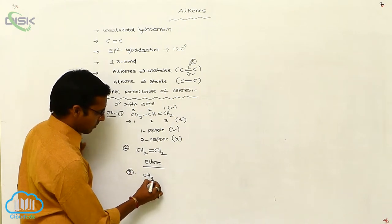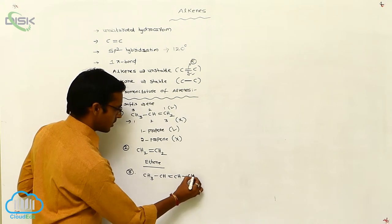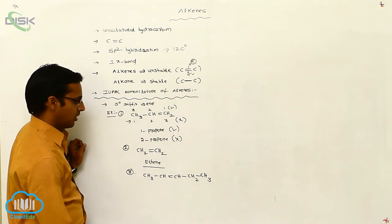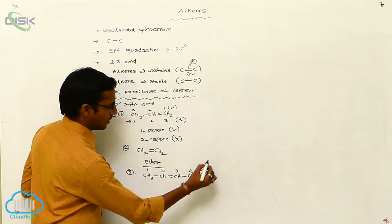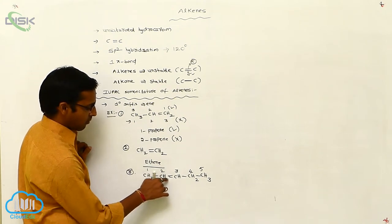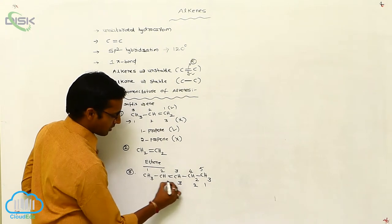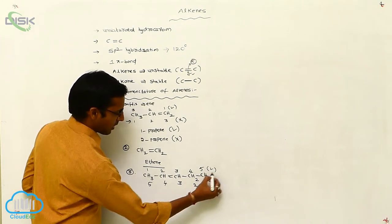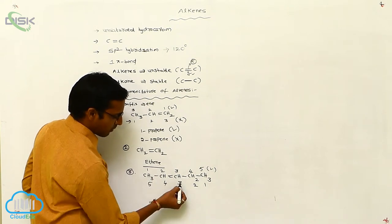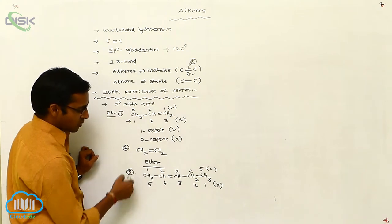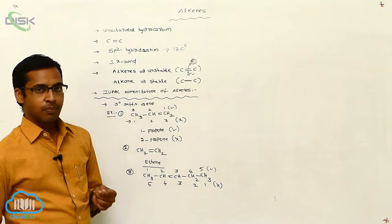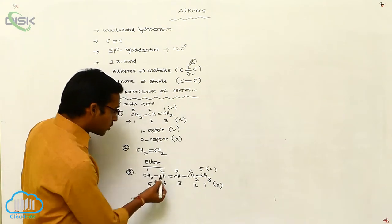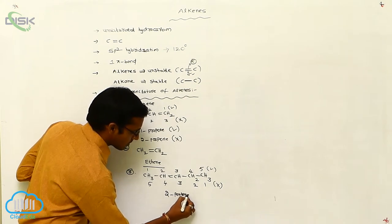Consider another example: CH3-CH=CH-CH2-CH3. First, select the longest carbon chain and give numbering. Numbering from one end gives the double bond position 2; from the other end it gets position 3. The first numbering is correct because the double bond gets the lower number. The longest chain has 5 carbons, so the root word is 'pent'. With a double bond, the name is 'pentene', specifically 2-pentene.